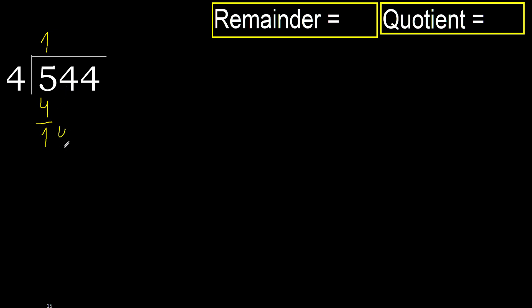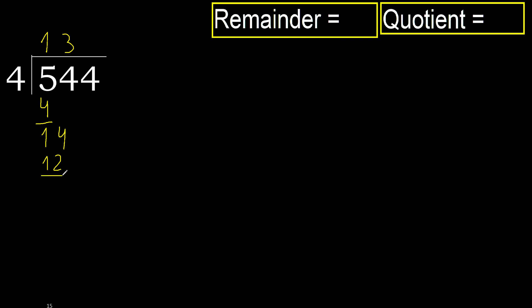Next. 14. 4 multiplied by 4, 16 is greater. Multiply by 3, 12. It is not greater. Okay. 14 minus 12 is 2.